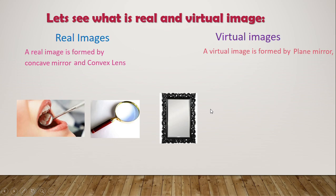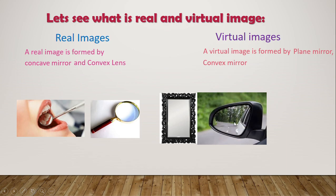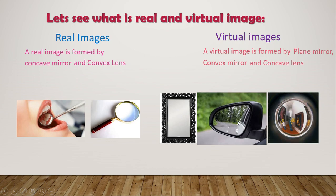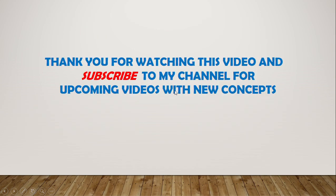The convex mirror is used as a rear-view mirror in vehicles. The concave lens forms a virtual image — the spectacle lens is nothing but a concave lens. So we are all familiar with these. This is all about real and virtual images. Hope you have understood the concept well. Thank you for watching this video; please subscribe to my channel for upcoming videos with new concepts.